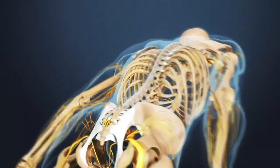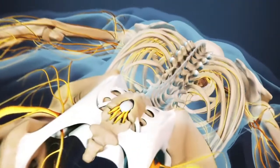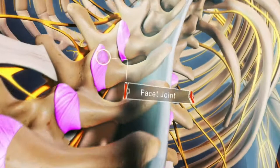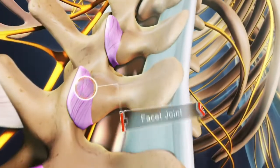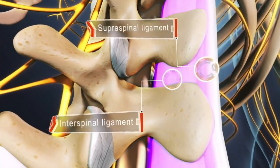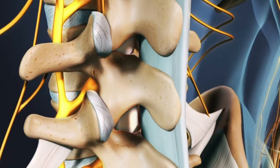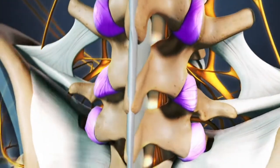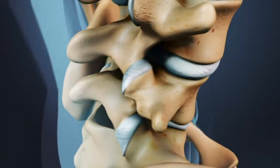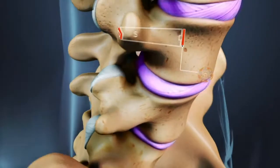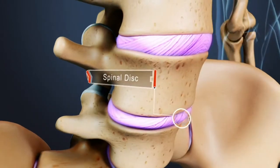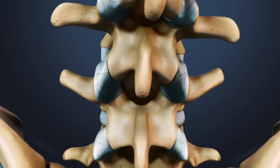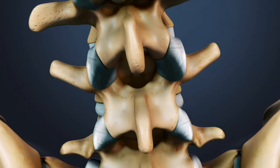Ankylosing spondylitis is a form of arthritis that leads to pain and stiffness primarily in the joints of the spine, as well as affecting the ligaments and tendons. Ligaments and tendons are tough, resilient bands of connective tissue that form an intricate network throughout the bones in the spine, including the discs between the vertebrae. These ligaments and tendons provide both support and flexibility for the spine.